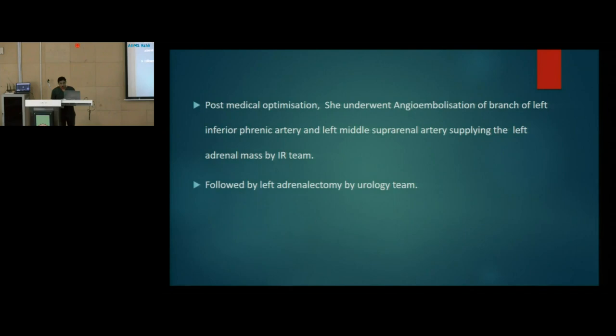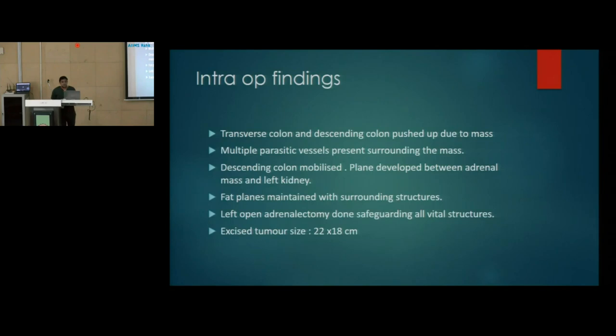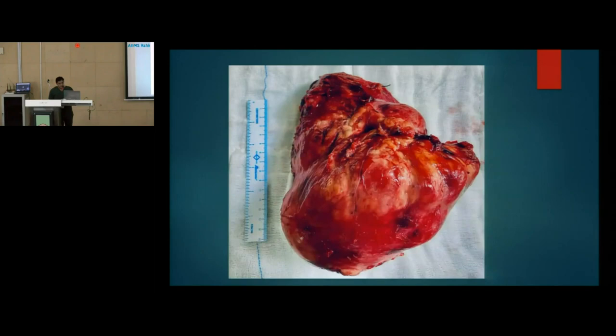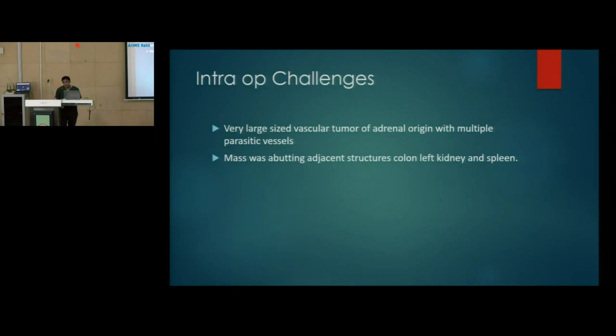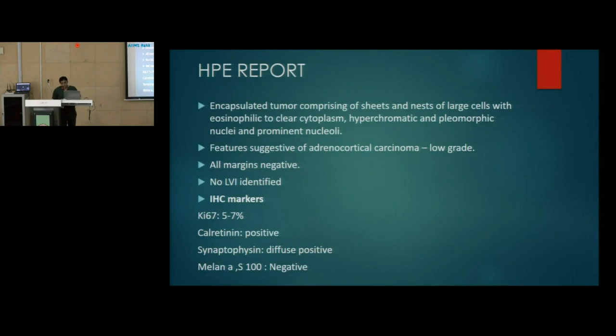Following embolization, left adrenalectomy was done by the urology team. Intraoperatively, there was a large mass pushing the transverse colon and descending colon upward, with multiple parasitic vessels surrounding the mass. Fat planes with surrounding structures were maintained. A large mass of 20 × 18 centimeters was excised. The intraoperative challenges included the very large, vascular tumor of adrenal origin with multiple parasitic vessels — which was why embolization was done initially — and the mass was also abutting adjacent structures like the colon, left kidney, and spleen.